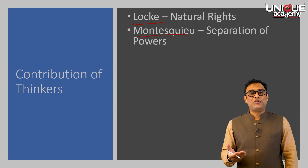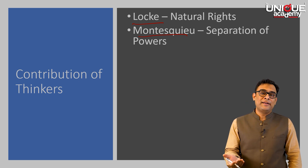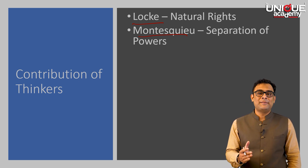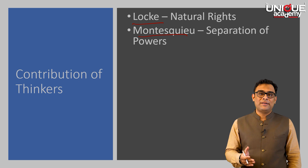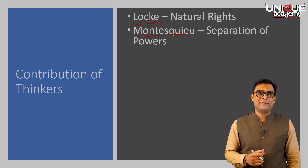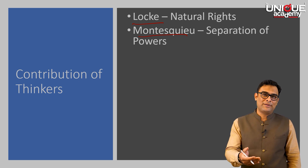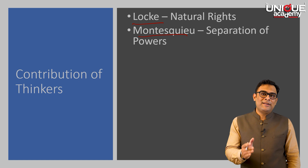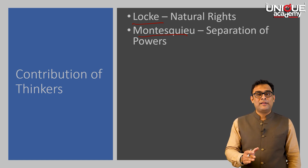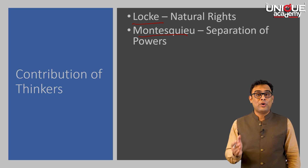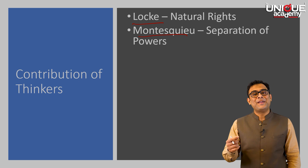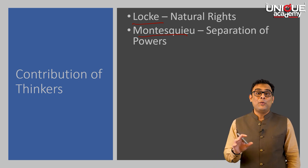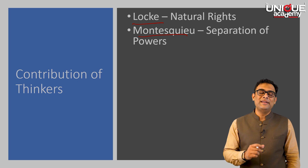Montesquieu's idea of separation of powers clearly finds reflection in the kind of state that the founding fathers created. They created three different wings of the state: executive, legislature, and an independent judiciary. This is also linked to the thoughts of Locke — if the inalienable rights had to be preserved, there was a need for a neutral referee not linked to the executive, and therefore the need for an independent judiciary to keep checks and balances on the other wings of the state.